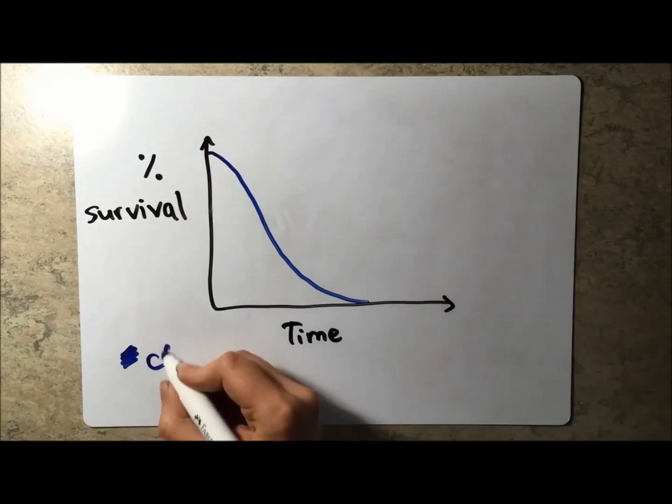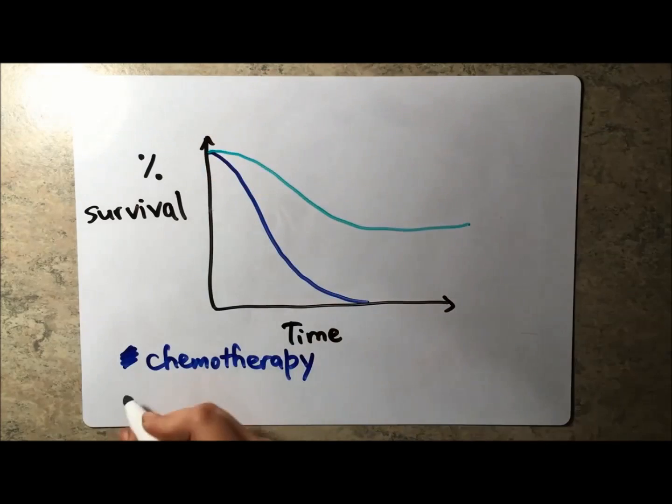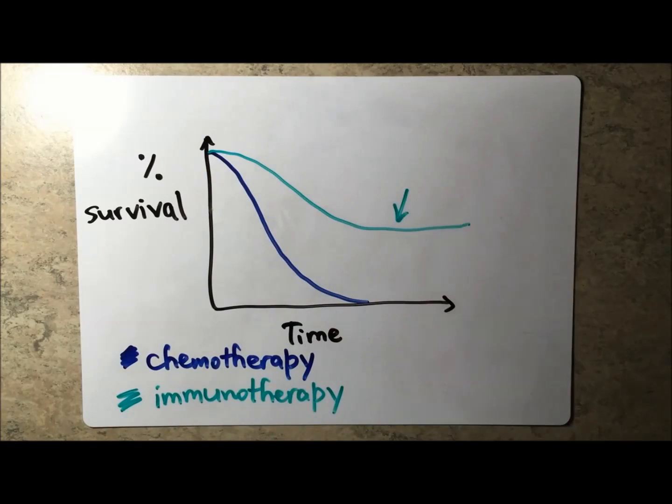Patients undergoing chemotherapy on average don't have as long a prolonged survival rate as those undergoing immunotherapy.